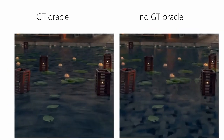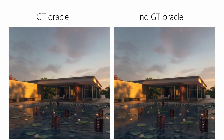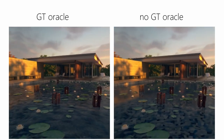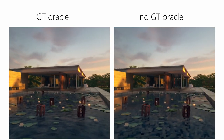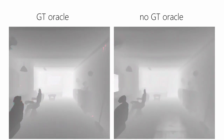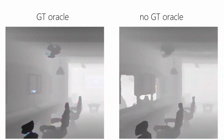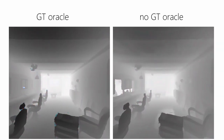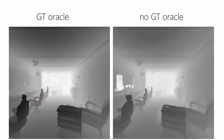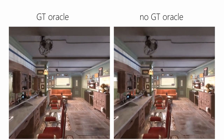Looking at both the glass window and the transparent water surface, we can see that the DoNerf trained without reference depth even performs slightly better for those surfaces. Similarly, for the mirror in barbershop, the oracle learns to place samples in a virtual room behind the surface and can therefore represent the fully reflective properties of the mirror at a much lower sample count.